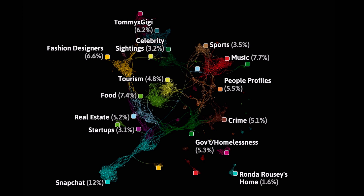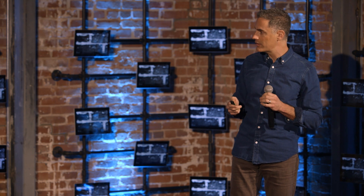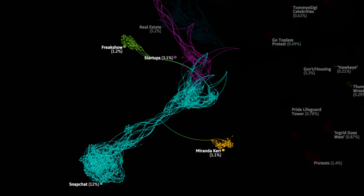If Tommy and Gigi dominate the fashion and celebrity area, we can see in the bottom left that it's Snapchat that's really overshadowing everything connected to startups. Snapchat is the single largest cluster in this entire network, comprising 12% of everything written about Venice Beach in the past year. Most of that was about the company's IPO and the introduction of Snapchat Spectacles. There's also a mini cluster about Miranda Kerr, a supermodel who recently married the founder of Snapchat. It's only when topics have something to do with LA that you get all these mini celebrity islands being spawned off the network — it's a very unique phenomenon.